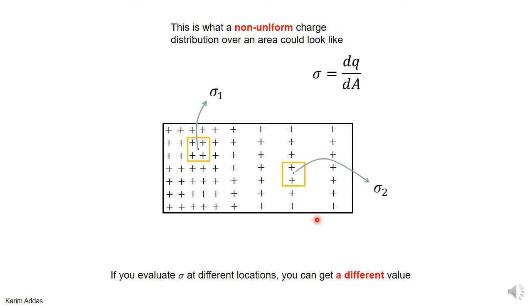So what does a non-uniform charge distribution look like? Here the charges are closer to each other on the left side, and as you go to the right they get farther apart. So clearly, if you evaluate sigma at point 1 and sigma at point 2, you'll get a different value — there's more charge in the left element of area, so sigma at point 1 will be bigger than sigma at point 2. Sigma in general doesn't have to be the same value at different points; it could be different.